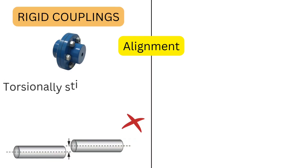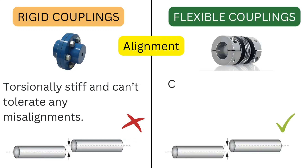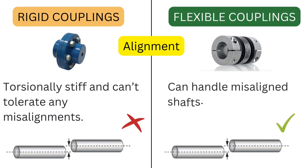Comparing misalignment: Rigid couplings are torsionally stiff and cannot tolerate any misalignments. Flexible couplings, on the other hand, can handle misaligned shafts.